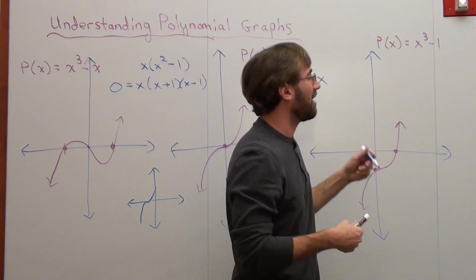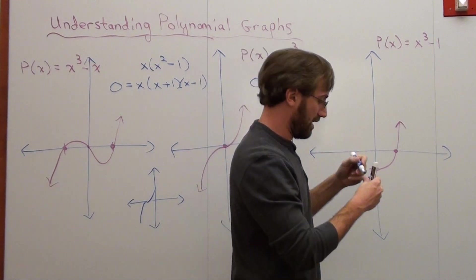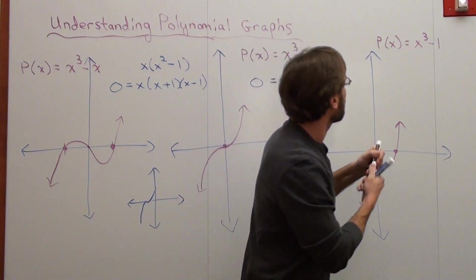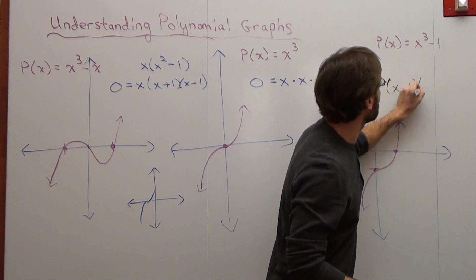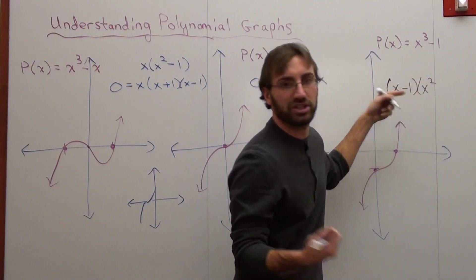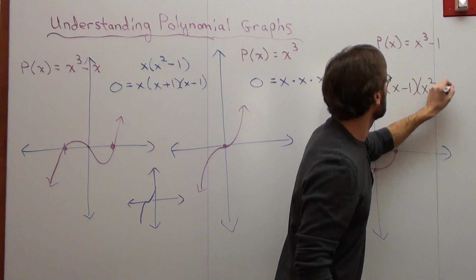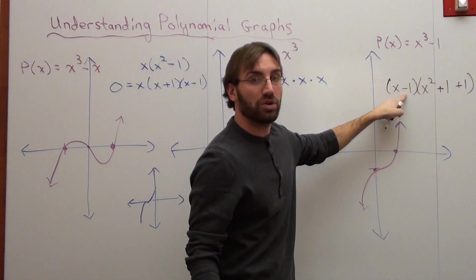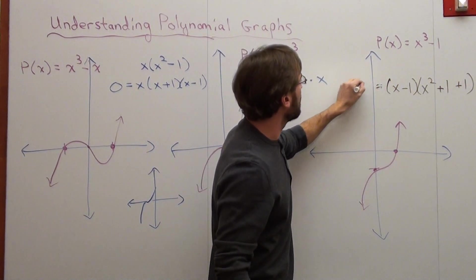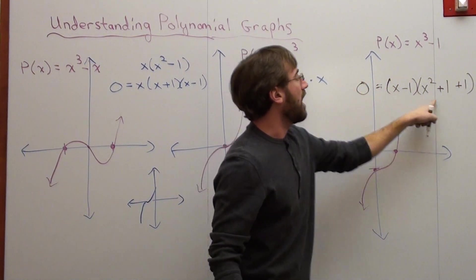Okay, if you factor x cubed minus one, and I'm not going to go the whole way with this, it turns out to be x minus one, x squared—change the sign—plus one x, and then plus one. So one of your real roots, if you set it equal to zero, is at one.